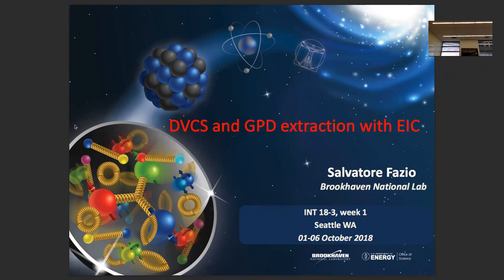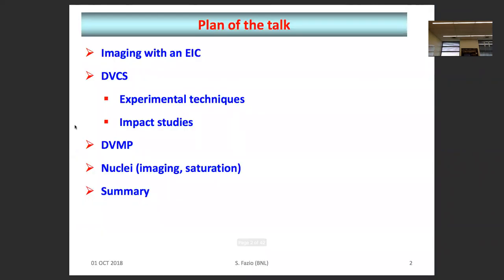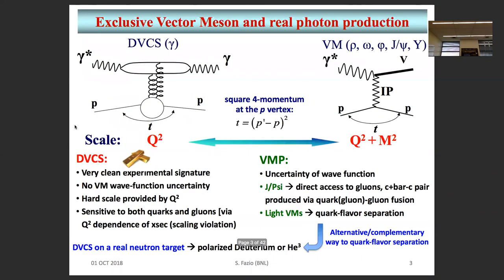Thank you very much for inviting me here. This is the closest place I've ever had a talk in my life. It's always good to be back here at the INT Institute for Nuclear Theory as an experimentalist — you always look like the dumbest one in the room. I will talk about our previous experience and the studies we did for measuring and extracting GPDs, measuring DVCS with an EIC, what we did, what is actually left to do in the future, and what we learned from the past.